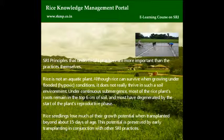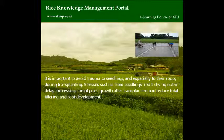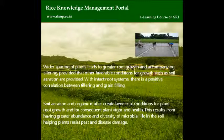Rice seedlings lose much of their growth potential when transplanted beyond about 15 days of age. This potential is preserved by early transplanting in conjunction with other SRI practices. It is important to avoid trauma to seedlings, especially to the roots during transplanting. Stresses such as from seedlings' roots drying out will delay the resumption of plant growth after transplanting and reduce total tillering and root development. Wider spacing of plants leads to greater root growth and accompanying tillering, provided that other favourable conditions such as soil aeration are provided. Soil aeration and organic matter create beneficial conditions for plant root growth and consequent plant vigour and health, resulting from greater abundance and diversity of microbial life in the soil, helping plants resist pests and disease damage.